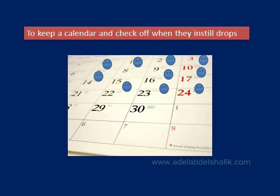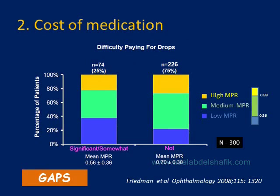Sometimes even with once-daily tablets I'm not sure if I've taken them or not. Getting a calendar and simply marking that you've taken the medication is helpful. The second factor is cost — when there is significant cost for the patient, adherence is less.